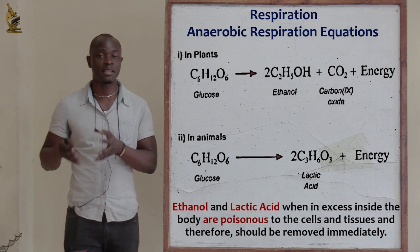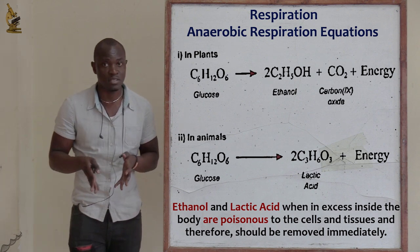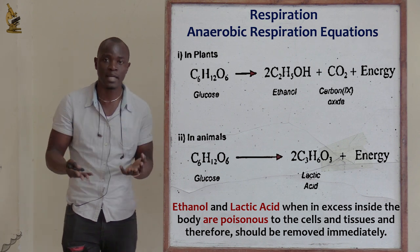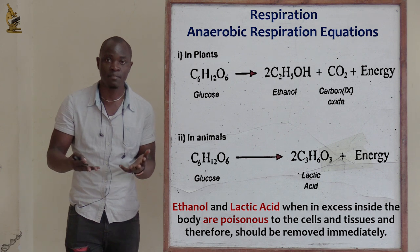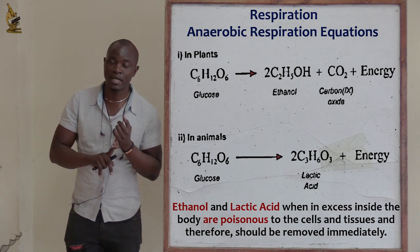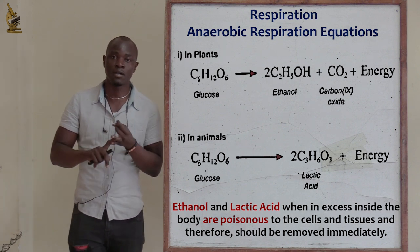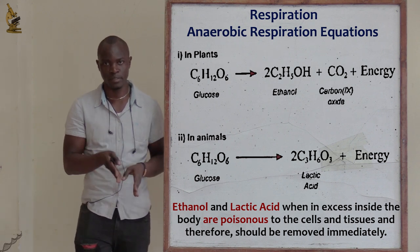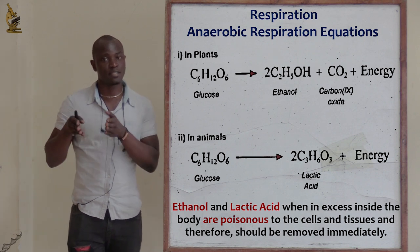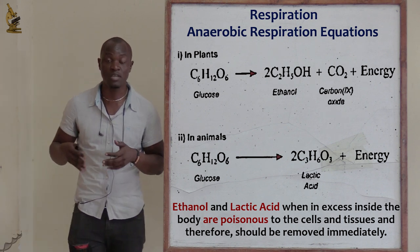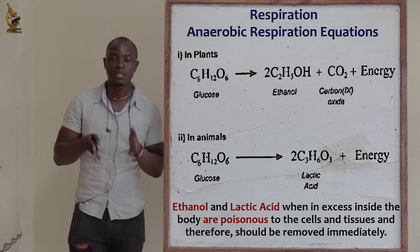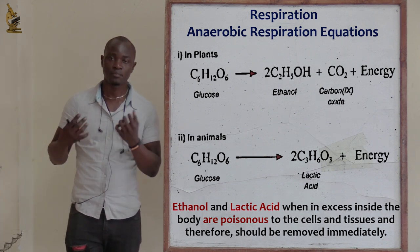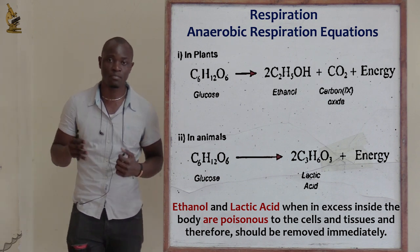Lactic acid and ethanol produced in these organisms should be removed immediately. If lactic acid and ethanol are not removed from the cells and tissues in time, the organisms are going to die, because lactic acid and ethanol, if they accumulate, will poison the cells. If the cells die, the whole organism dies. Therefore, lactic acid and ethanol must always be removed immediately from the body as soon as they are formed.